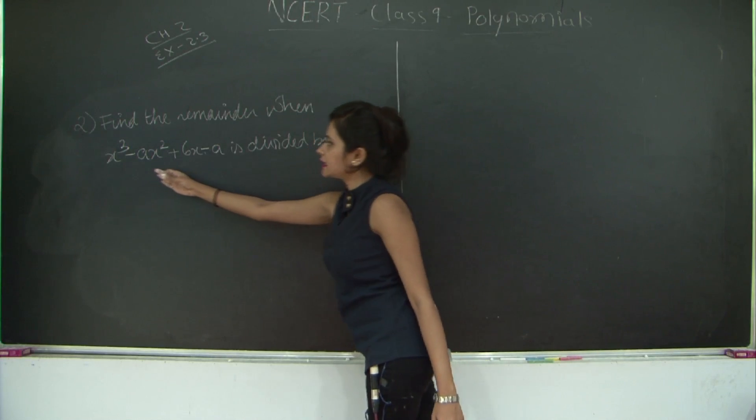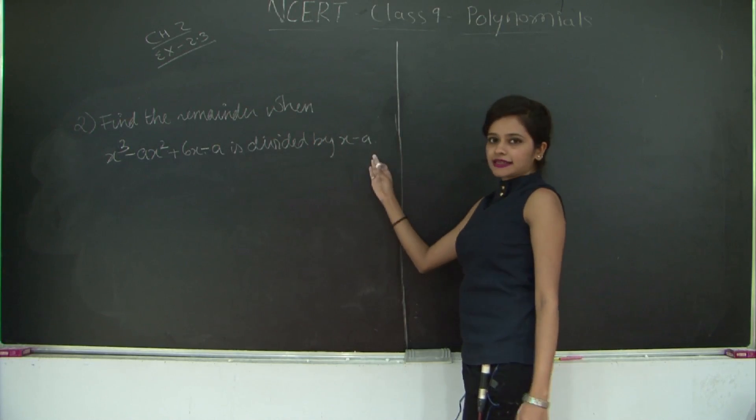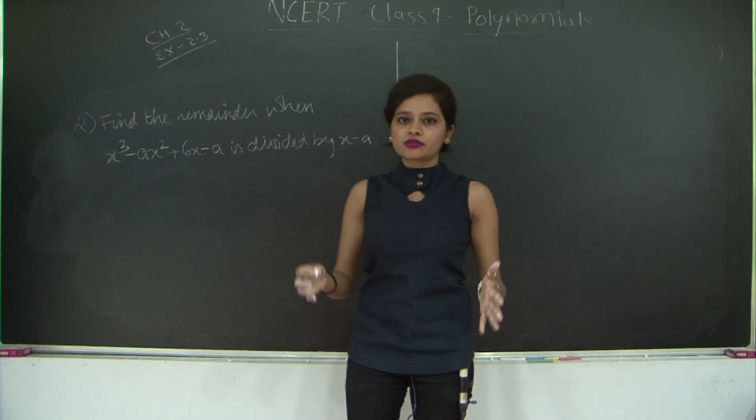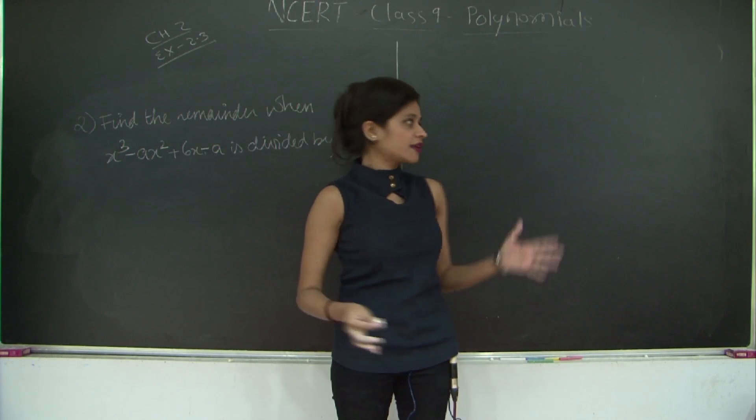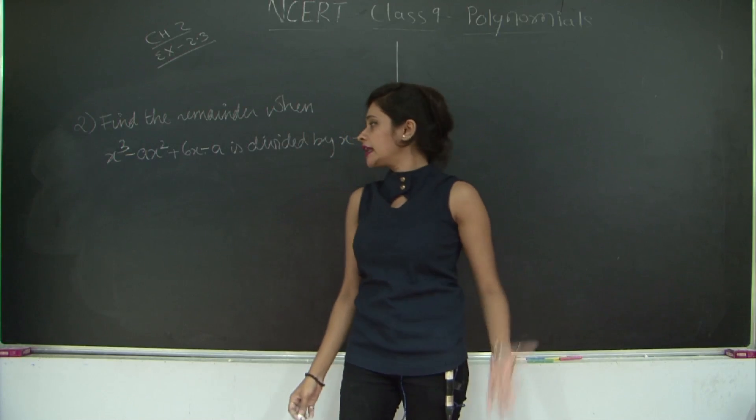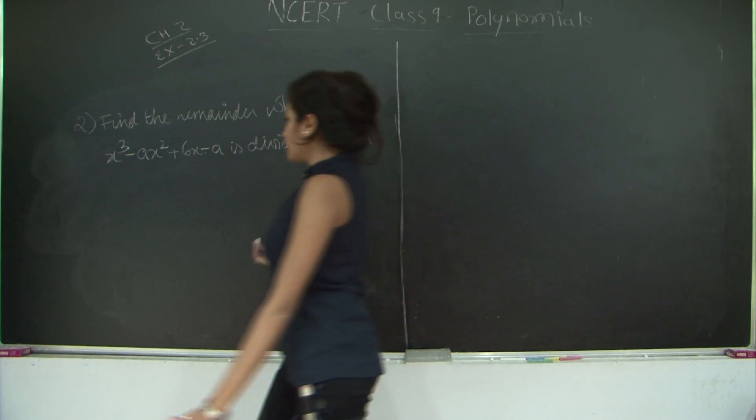So you can clearly see that this is the dividend and x-a is the divisor. We will solve this using both the methods, the remainder theorem method as well as the long division. So first, let's get started with the remainder theorem method.